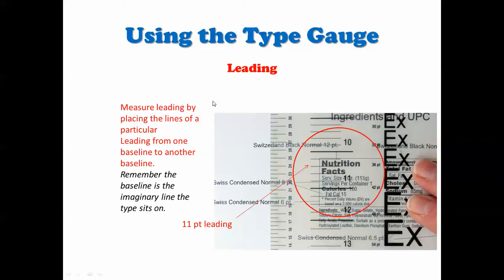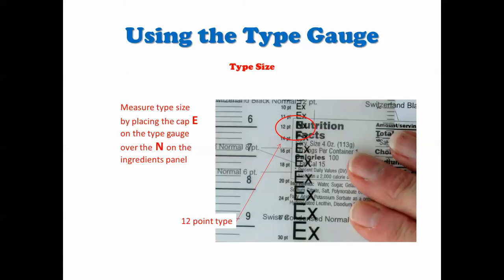Okay, so let's look at the leading here. You can see the N and the F match up here at the 11-point leading. So you line up your type gauge over your type on that imaginary baseline that you have there, and there you have it. You see 11-point leading.